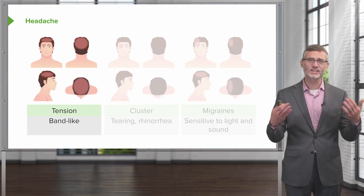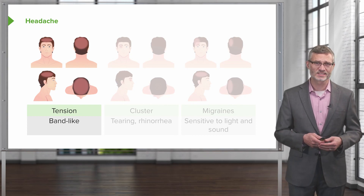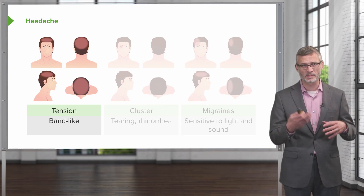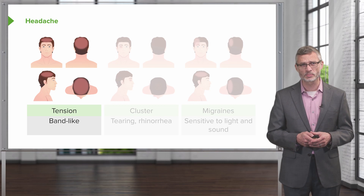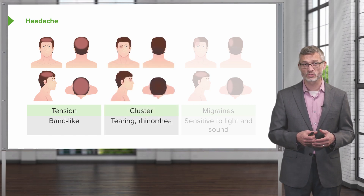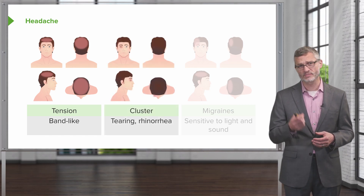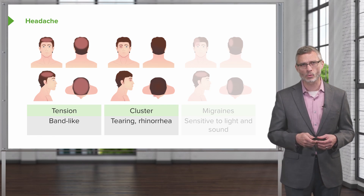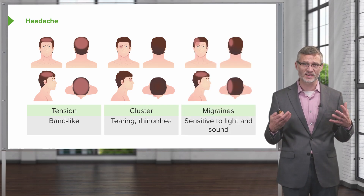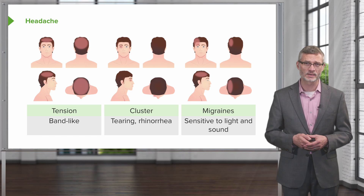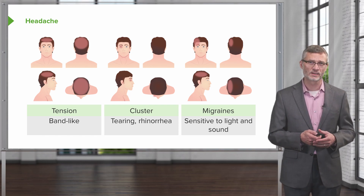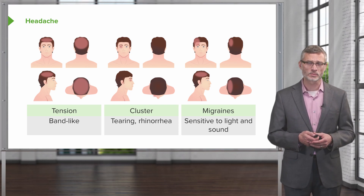And lastly, idiopathic headaches — the most common of which is tension headaches, which are typically band-like in distribution. Cluster headaches most often manifest with unilateral, ice-pick-like retroorbital pain. And then migraines, which are also fantastically common — patients oftentimes report photophobia or phonophobia, among other symptoms.